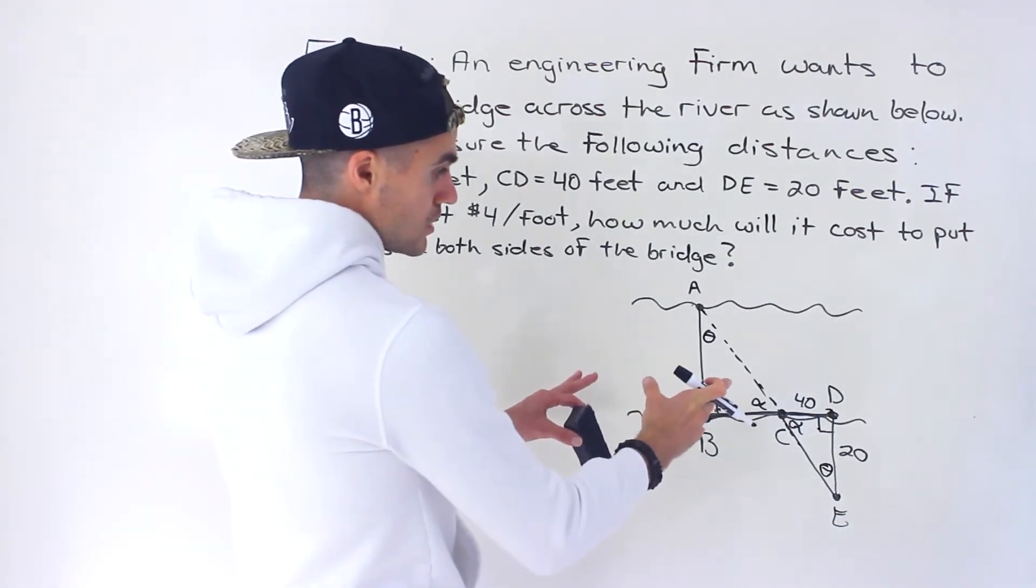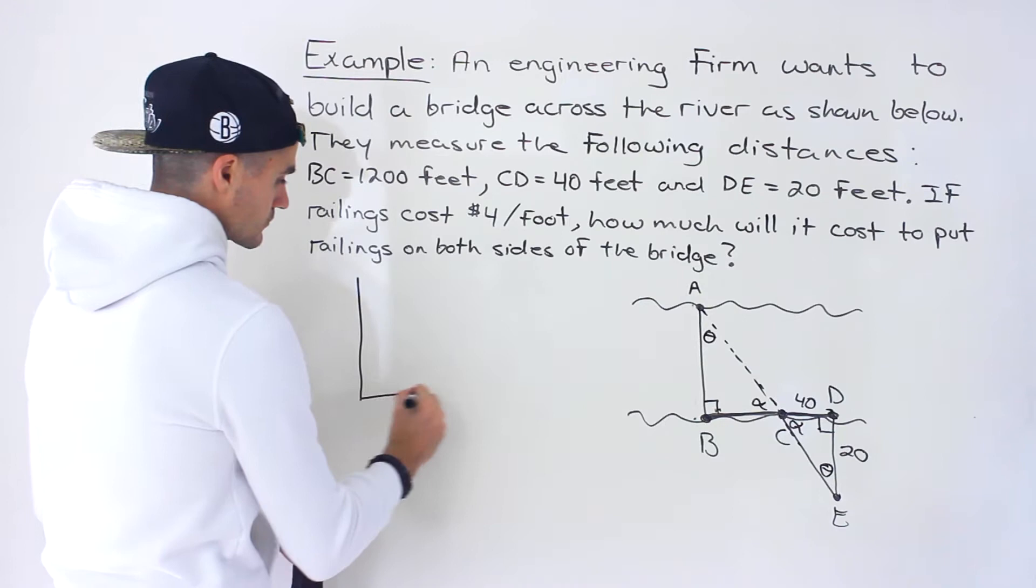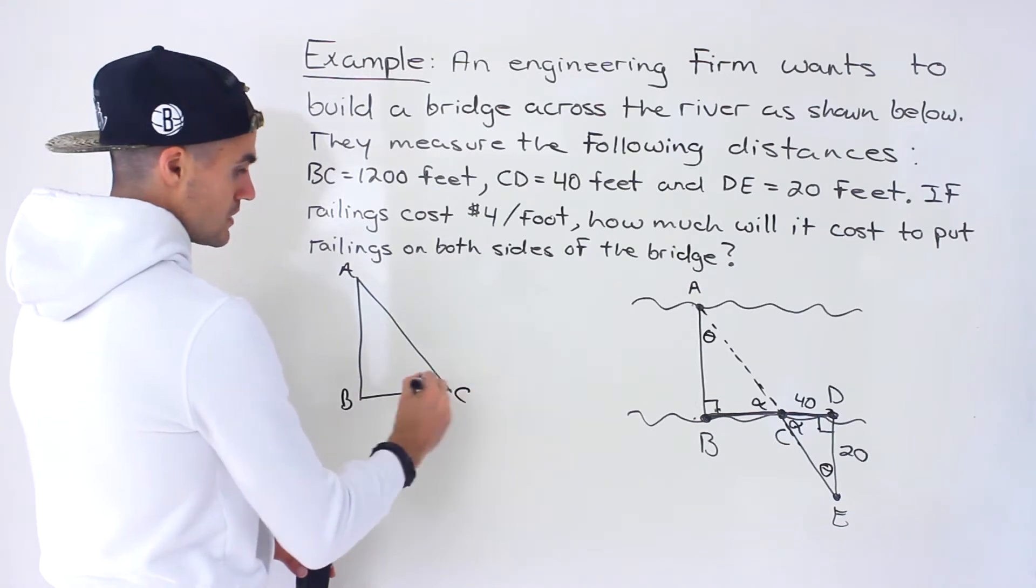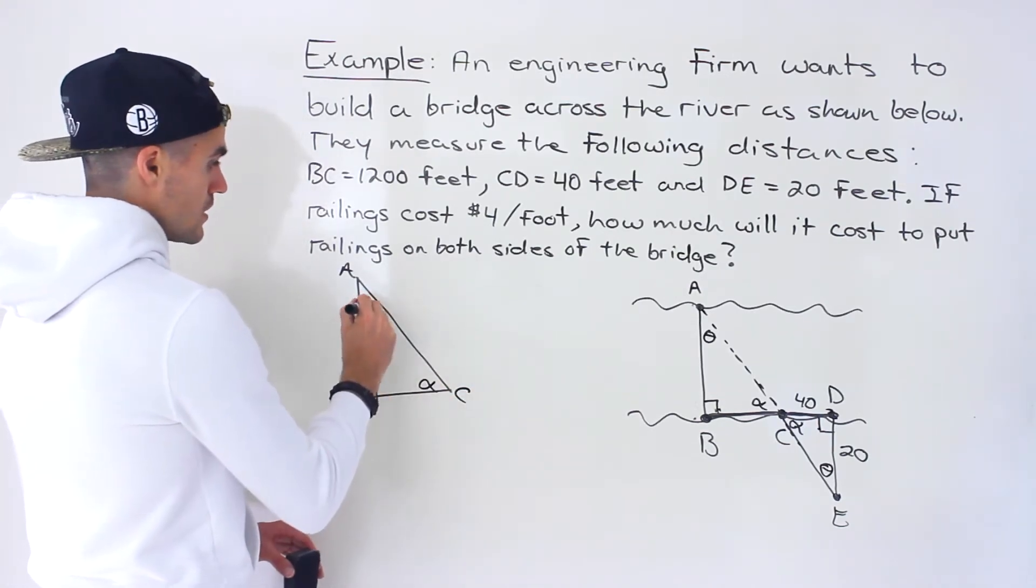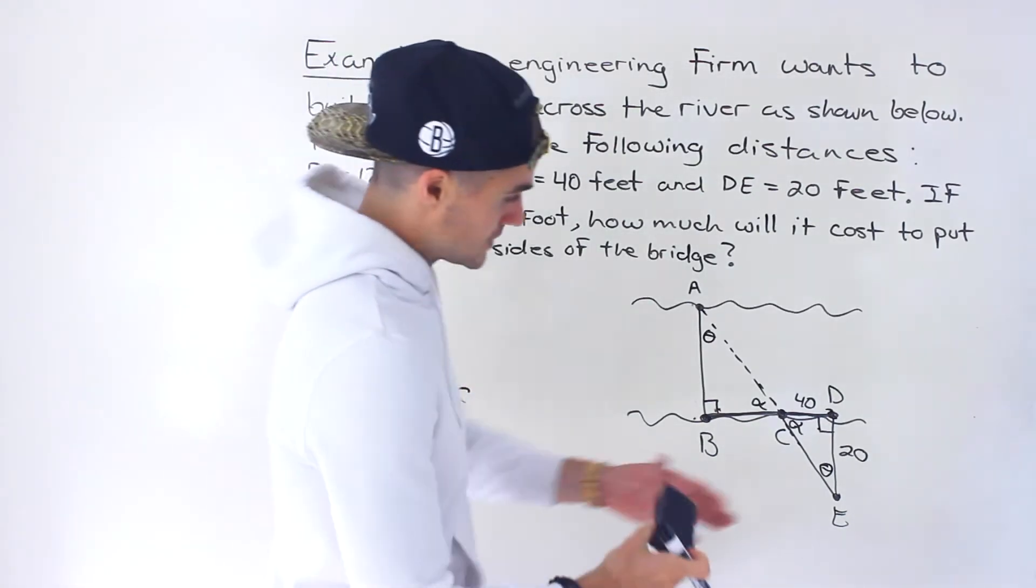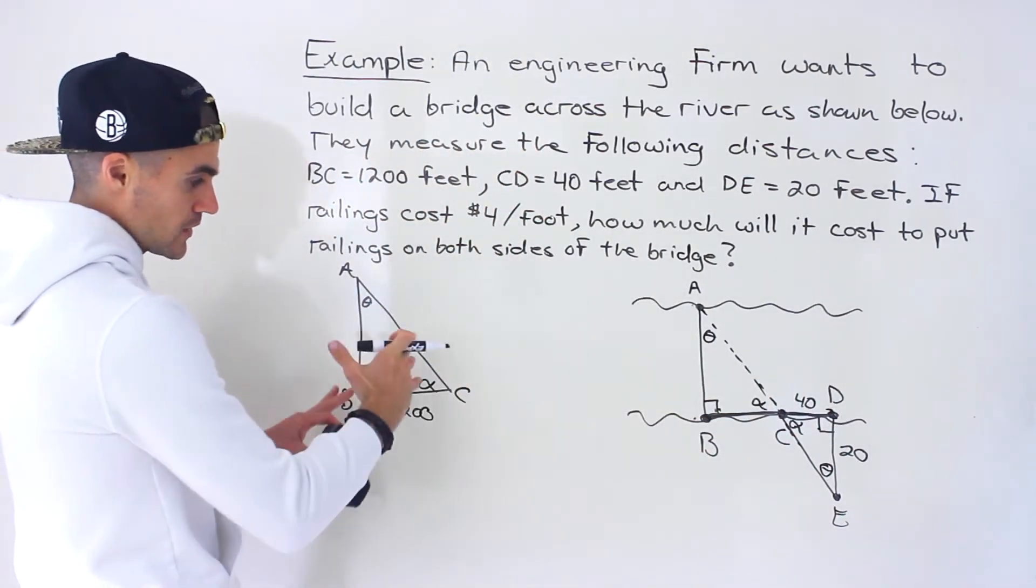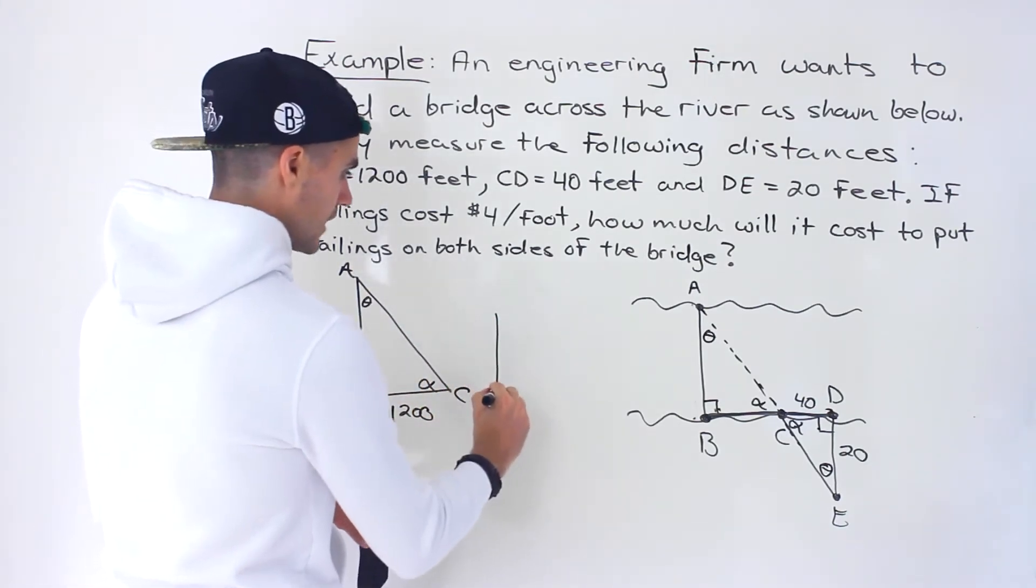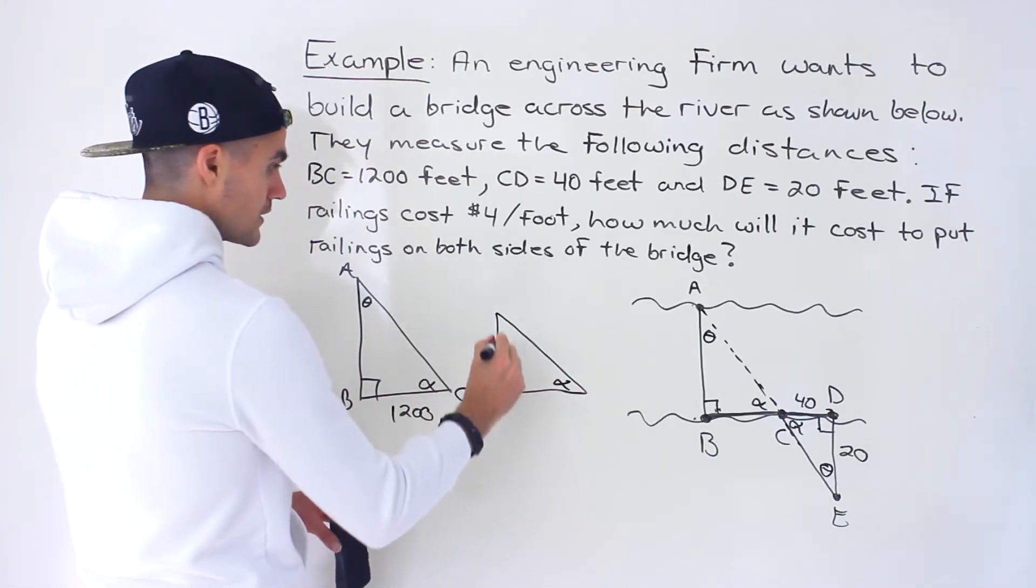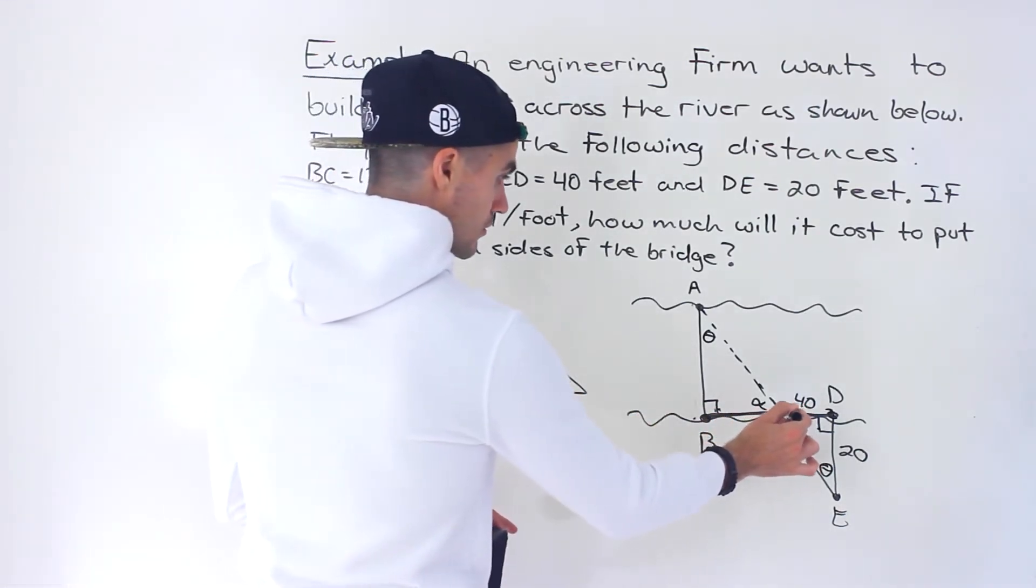If we draw these triangles in the same format, the larger triangle, which is triangle ABC, has this angle at 90 degrees, we have theta here, and we're told BC is 1200 feet. If we draw the smaller triangle and take this triangle, rotate it so it's placed in the same way according to the angle, we place it like this where the angles line up - this angle, the 90 degrees, and the theta here.